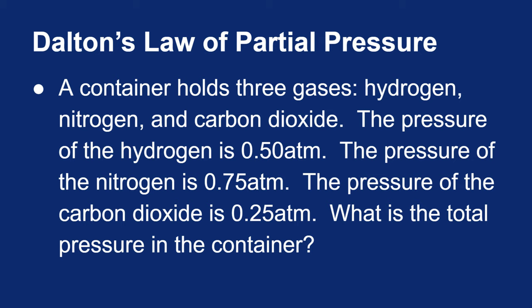Hopefully, you can see that if you just take the pressures and add them together, 0.25 plus 0.75, well that gives me one atmosphere, plus 0.5 more, that gives me 1.5 atm. And that's it. That's Dalton's law of partial pressure.